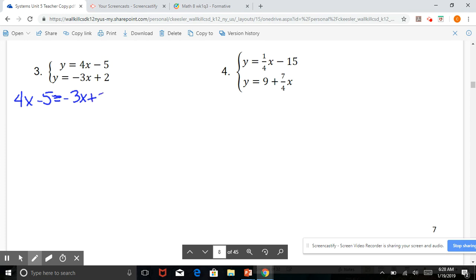So we have 4x minus 5 equals negative 3x plus 2. Start by adding 3x to both sides.